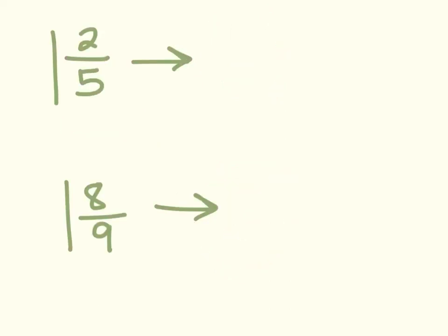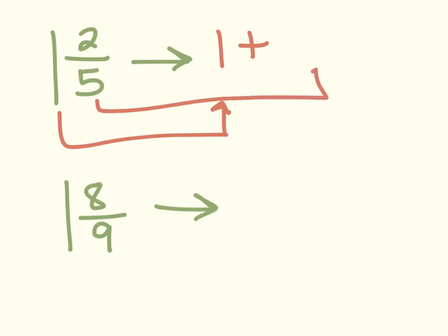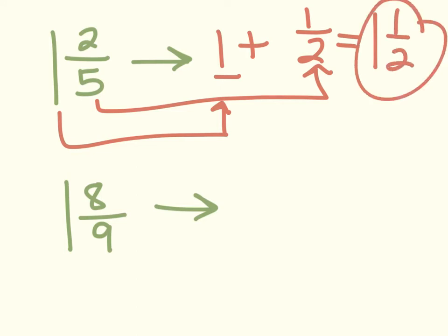We can also estimate and use benchmarks with mixed numbers. In this case we have 1 and 2 fifths. When we have a mixed number, we break it apart: we keep the 1 separate and then estimate the fraction. So 2 fifths — 2 out of 5 is pretty close to half of 5, which would be 2.5. So we'd say 2 fifths is close to 1 half. I add the whole number 1 plus my benchmark of 1 half, and my estimation for 1 and 2 fifths would be 1 and 1 half.